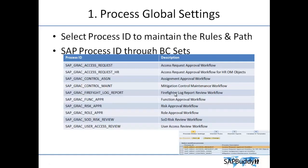This process ID is used for firefighter log review. After using the firefighter, there is a separate process to review and certify the logs, so we need to trigger some notifications and related processes. All workflow-related processes during the firefighter review will be defined in this process ID: GRAC_FIREFIGHTER_LOG_REPORT. The next one is Function Approver — this process ID is used to enable an approver process during function maintenance, or if you want to trigger an approver when changing a function.